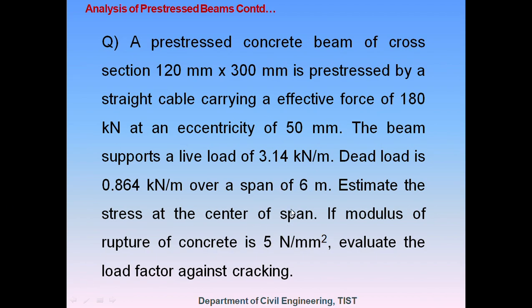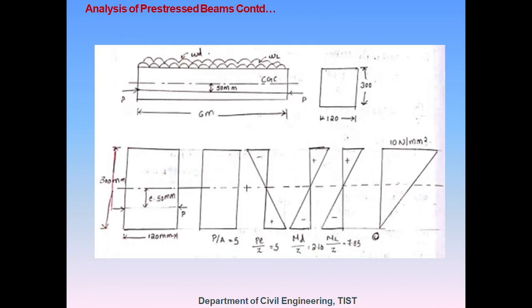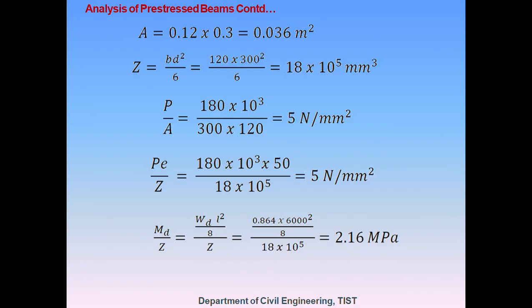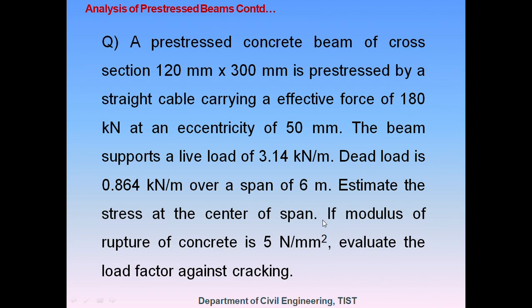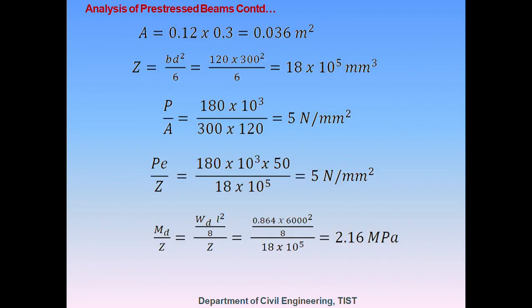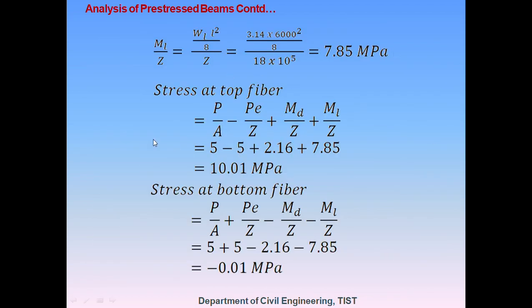We can do the first part of this problem as in the previous examples. This is Case B — the stress distribution due to the eccentric tendon. The stress at the top fiber is calculated using the equation P/A minus Pe/Z plus MD/Z plus ML/Z. And the stress at the bottom fiber is P/A plus Pe/Z minus MD/Z minus ML/Z, as discussed in the previous lecture.